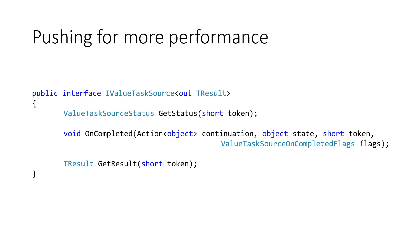IValueTaskSource mocks the behavior of a Task. There is a GetResult to get the result of that async operation, a GetStatus to find out about the status of the operation, and you can pass a callback that will be called after the operation completes. This is very low-level stuff and most programmers do not need to use this — it is something the .NET team uses to improve performance inside its own framework. For example, ASP.NET Core has been improved massively using these.